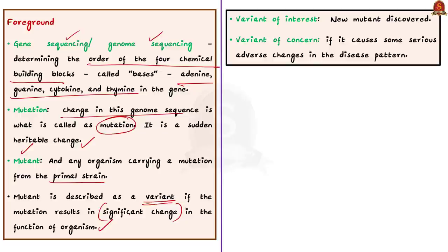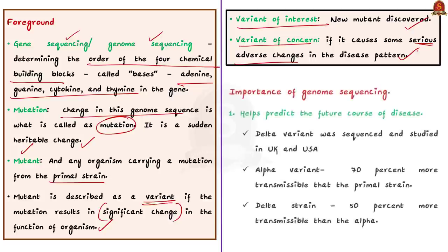Any organism carrying a mutation from the primal variant is called a mutant. The mutant is described as a variant if the mutation results in some significant change in the function or appearance of the organism. And this variant is tagged as variant of interest if it appears newly. This is very important. The variant of interest is upgraded as variant of concern if it causes some serious adverse changes in the disease pattern, like increased infectivity or increased severity. So far we saw about mutation, mutant, variant, variant of interest and variant of concern. Now let us see the important points in the editorial.